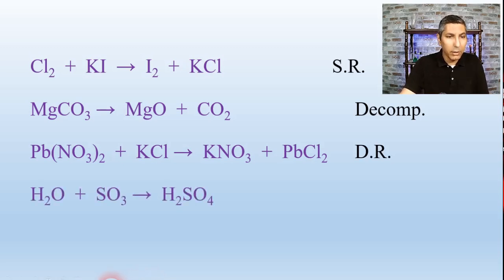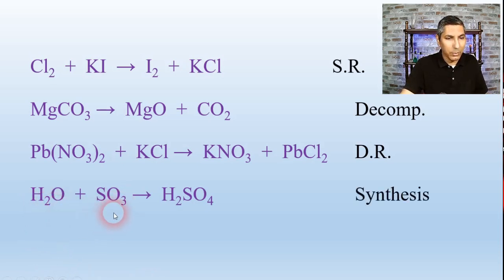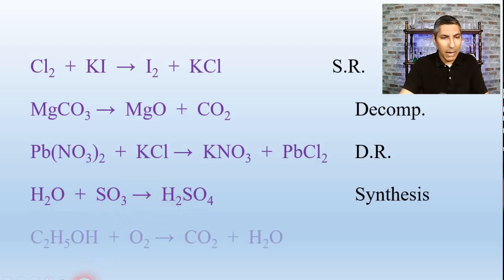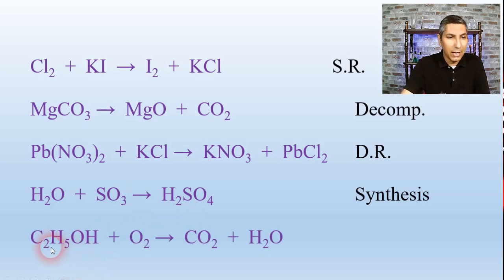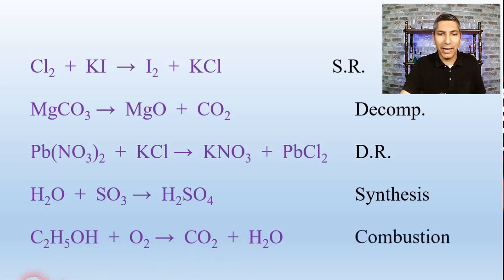Here's the fourth example. If you said synthesis, you are correct again — we have two reactants, water and sulfur trioxide, combining to make one product, sulfuric acid. How about this last one? We have what looks to be a carbon, hydrogen, and oxygen-containing compound reacting with oxygen gas to produce carbon dioxide and water. That's a good sign of a combustion reaction.